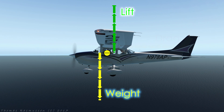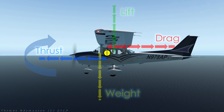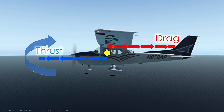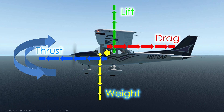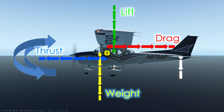Lift and weight create a nose down couple while thrust and drag create a nose up couple, and therefore they cancel each other out to some degree. Any residual rotational moments are compensated for by the horizontal stabilizer. The pilot will use the trim to set the force produced by the stabilizer to maintain straight and level.